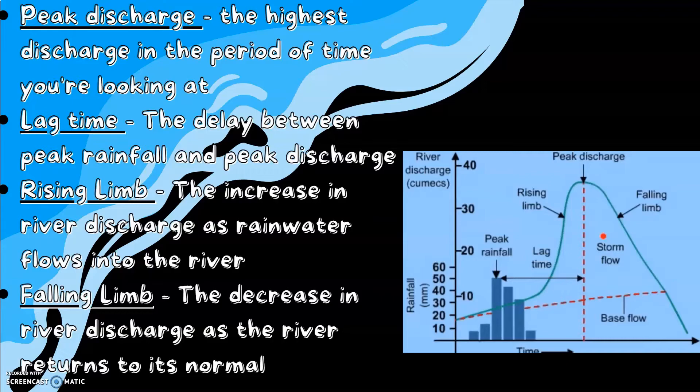Rising limb is the increase in river discharge as rainwater flows into the river. And falling limb is the decrease in river discharge as the river returns to its normal level.